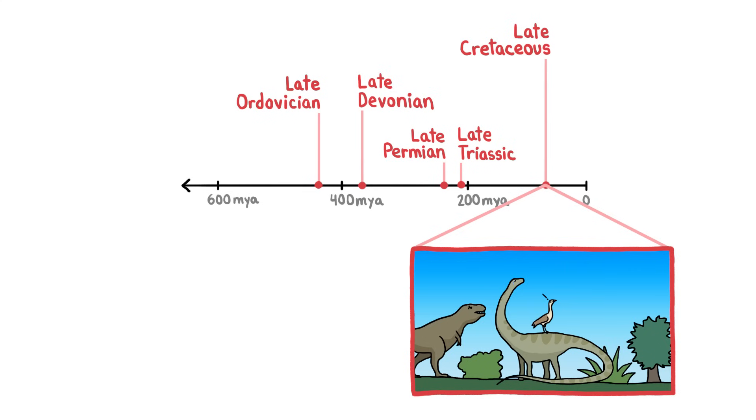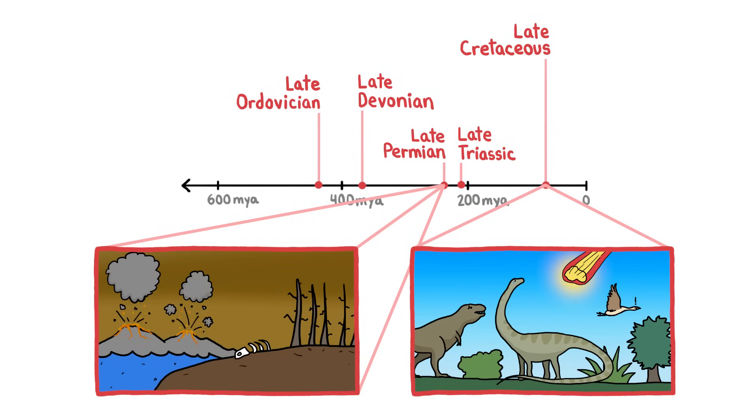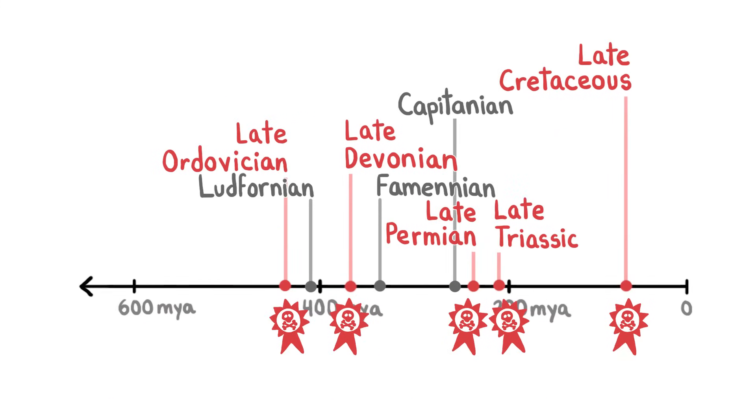They include that time 66 million years ago when a huge meteorite took out the non-avian dinosaurs, as well as the even more apocalyptic extinction at the end of the Permian period, which wiped out more than 90% of Earth's species. But the Big Five weren't the only big mass extinctions, and they might not have even been the biggest.